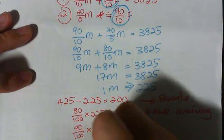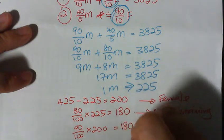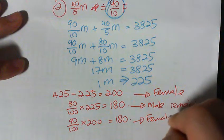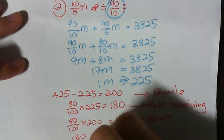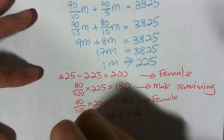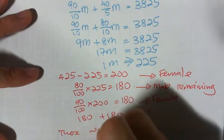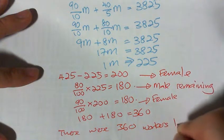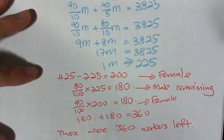Then 90 over 100 times 200, I'll get 180 as well, because they are actually the same. So this is female. So total workers left is 180 plus 180 equals to 360. There were 360 workers left. Done.